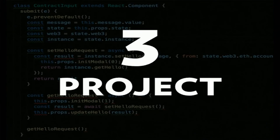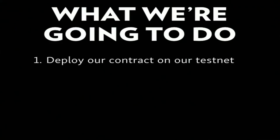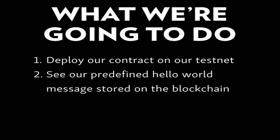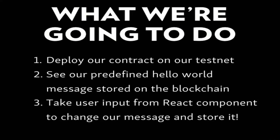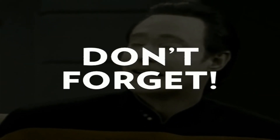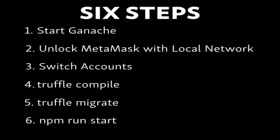Let's actually get started with our project. What are we going to do? First, deploy our contract on our testnet. Second, see our predefined hello message stored on the blockchain. Third, take user input from our React component to change our message, store it on the blockchain, retrieve it, and update our state in React. Anytime you start one of these projects, follow six steps: start Ganache, unlock MetaMask and make sure the local network is selected, switch accounts to the one we imported, truffle compile, truffle migrate, and npm run start.